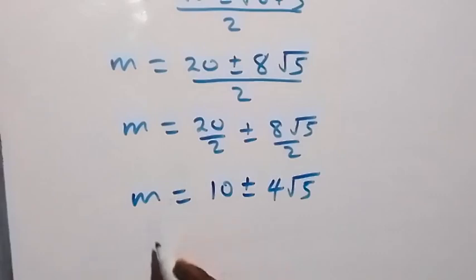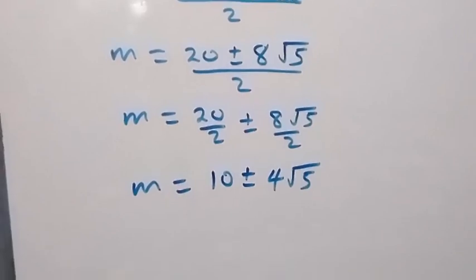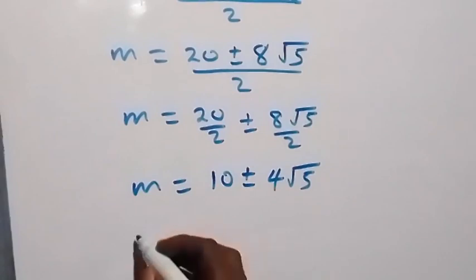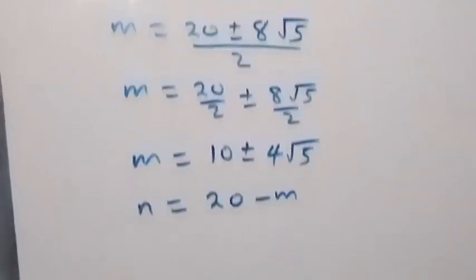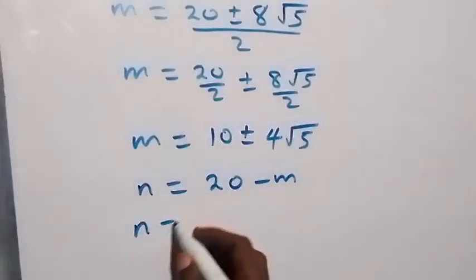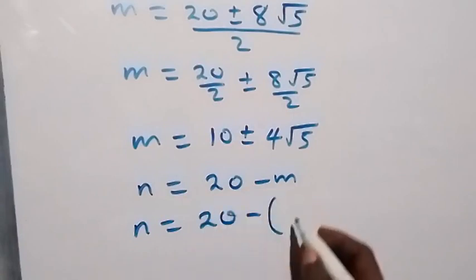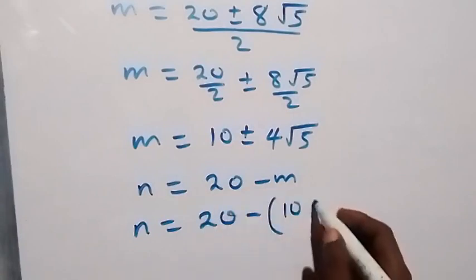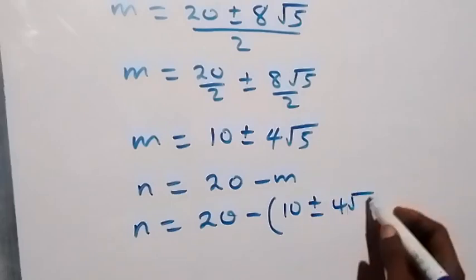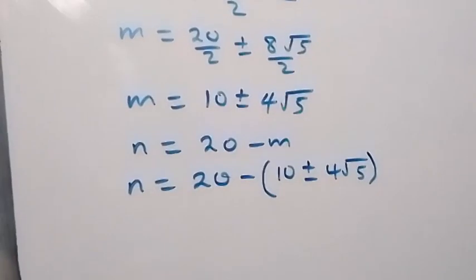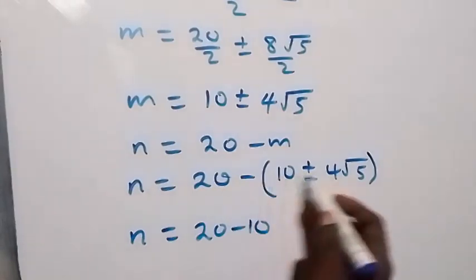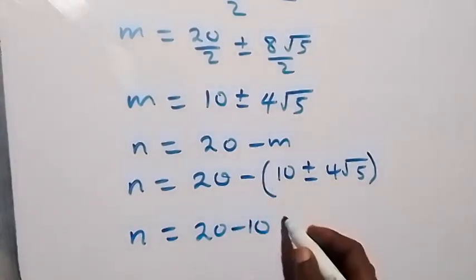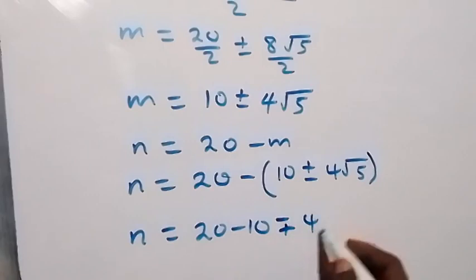We can get the value of n using the relation n equals 20 minus m. This implies n equals 20 minus (10 plus or minus 4 root 5), which gives n equals 10 minus or plus 4 root 5.